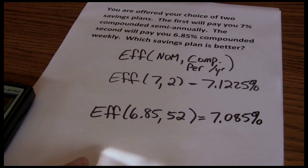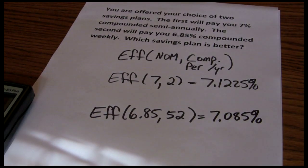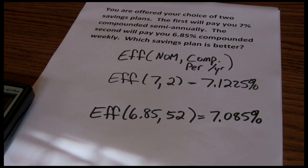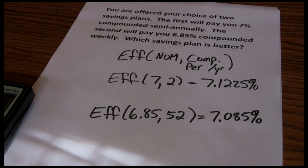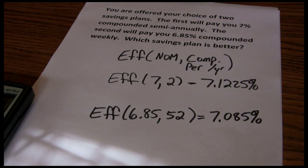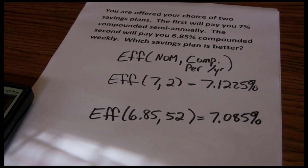We can see these are both very close, but we're a little bit better off at 7% compounded semi-annually compared to 6.85% compounded weekly. The more frequent compounding is not enough to offset the slightly lower nominal interest rate. That's all there is to effective annual rates using your TI-83 or TI-84 calculator.